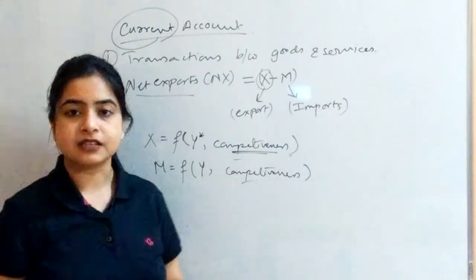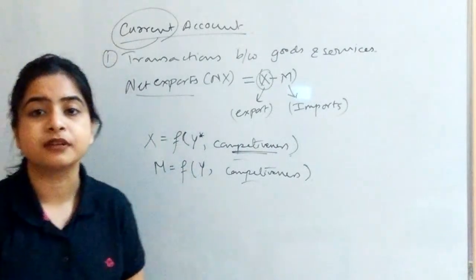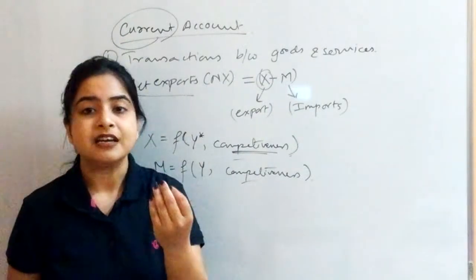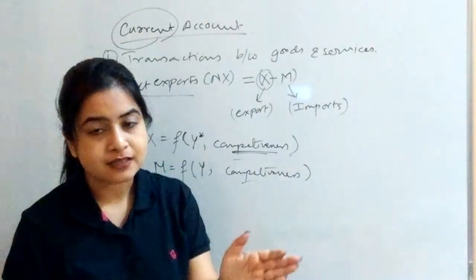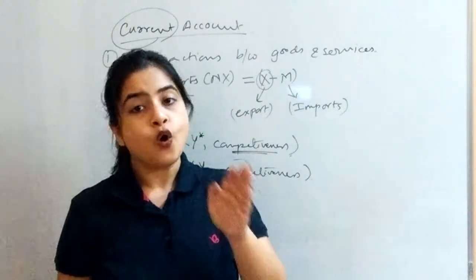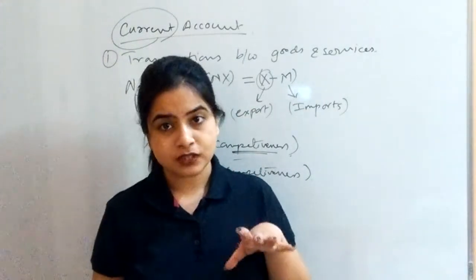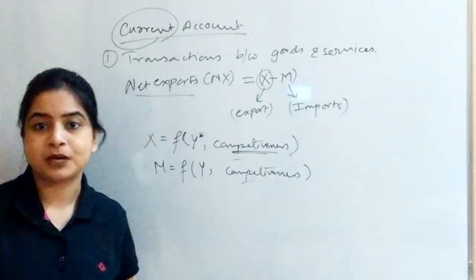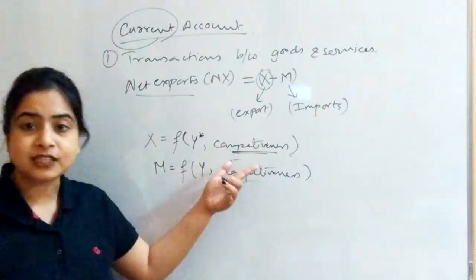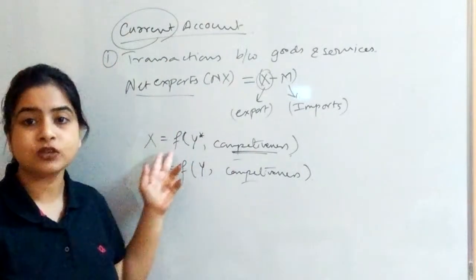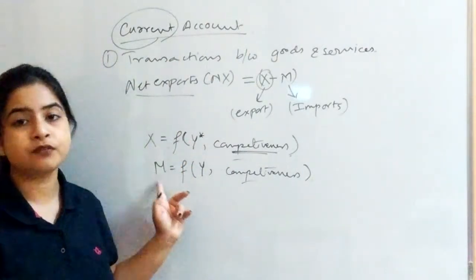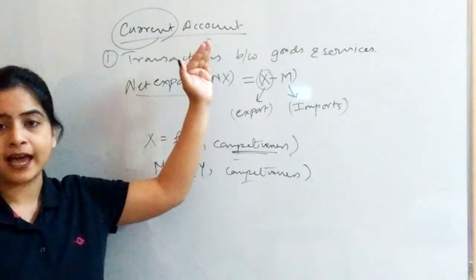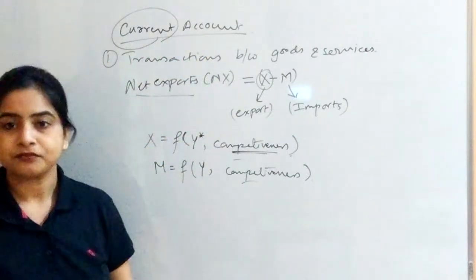Talking about competitiveness — what is it and how is it determined? Competitiveness is mainly expressed in terms of relative prices: the price of a country's own product relative to the foreign country's product. That relative price determines competitiveness, which further determines exports and imports, which further determines net exports, and from net exports we get the current account.